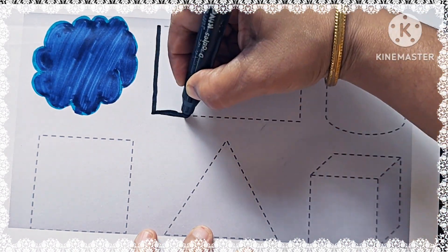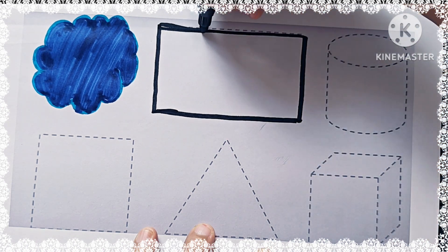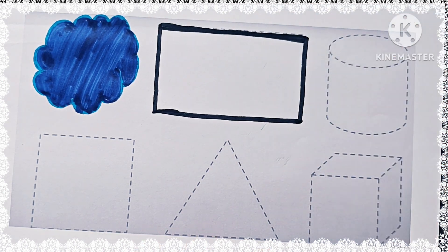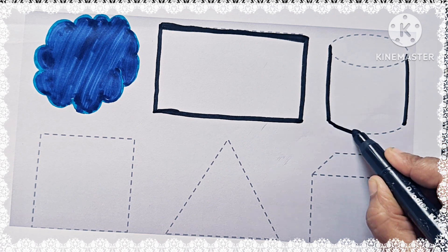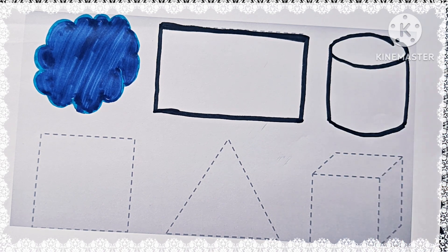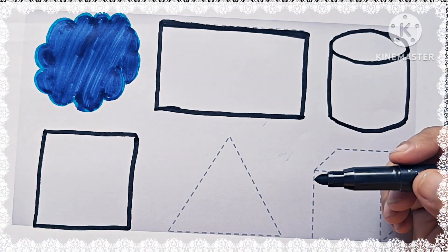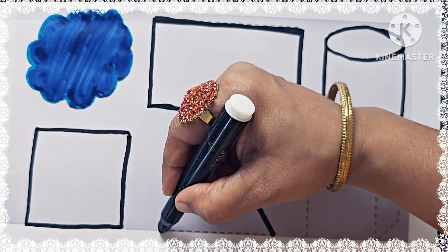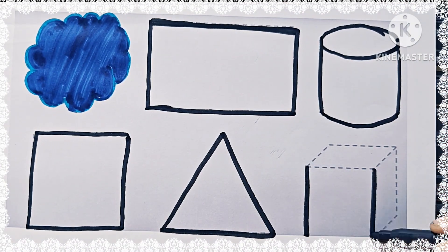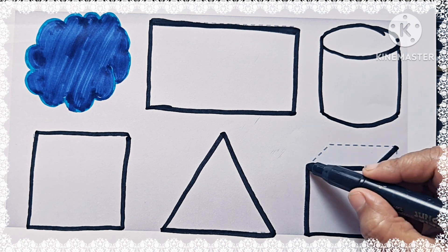It is rectangle. Rectangle has four sides. It is cylinder. It is square. Square has four sides. It is triangle. Triangle has three sides. It is cube.